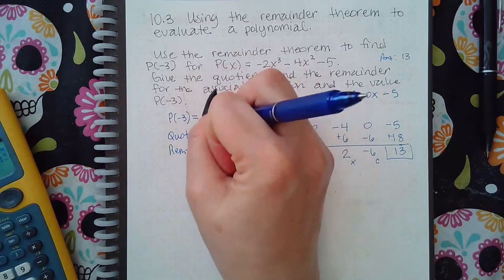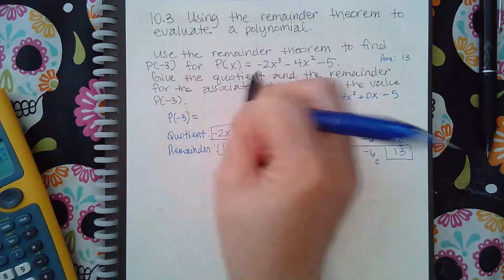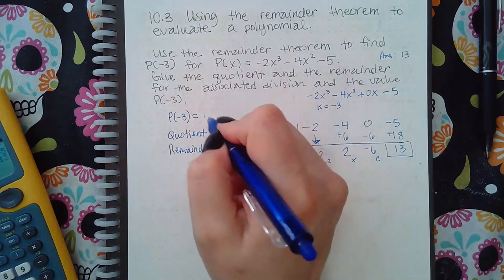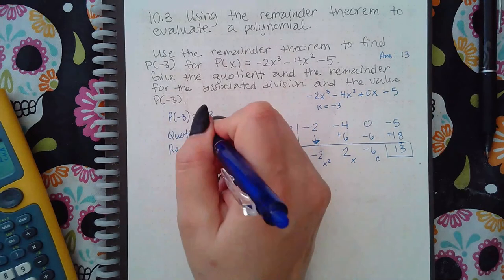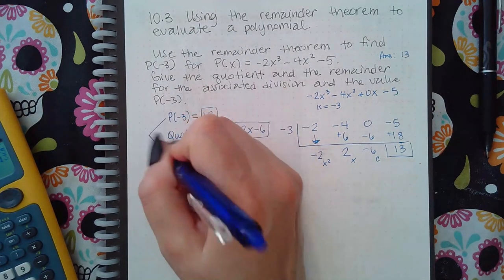It won't have an R like that, it'll just say p(-3), and whatever you wrote for the remainder is the same thing for p(-3), because that's the remainder theorem - these two are the same.